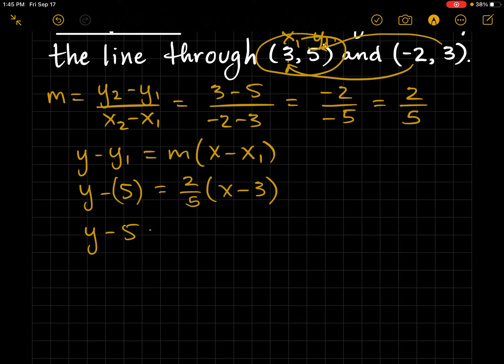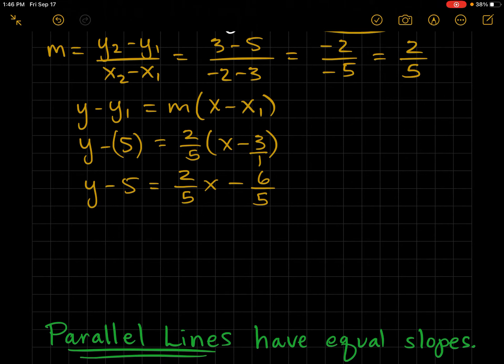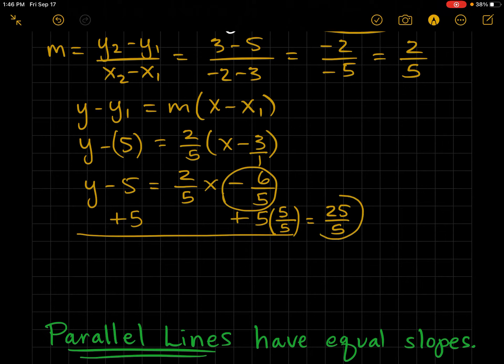Now, I have y minus 5. And I'm going to distribute. So I have 2 fifths x minus... When you multiply fractions, you do numerator with numerator and denominator with denominator. Now, I'm going to combine like terms. So I'm going to add 5 to both sides. Ooh, small problem here. I do not have common denominators. So I'm going to make 5 my common denominator. Notice 5 over 5 is just 1. So I haven't changed the value. And now, this is 25 over 5. And now, I can combine these two a little easier.